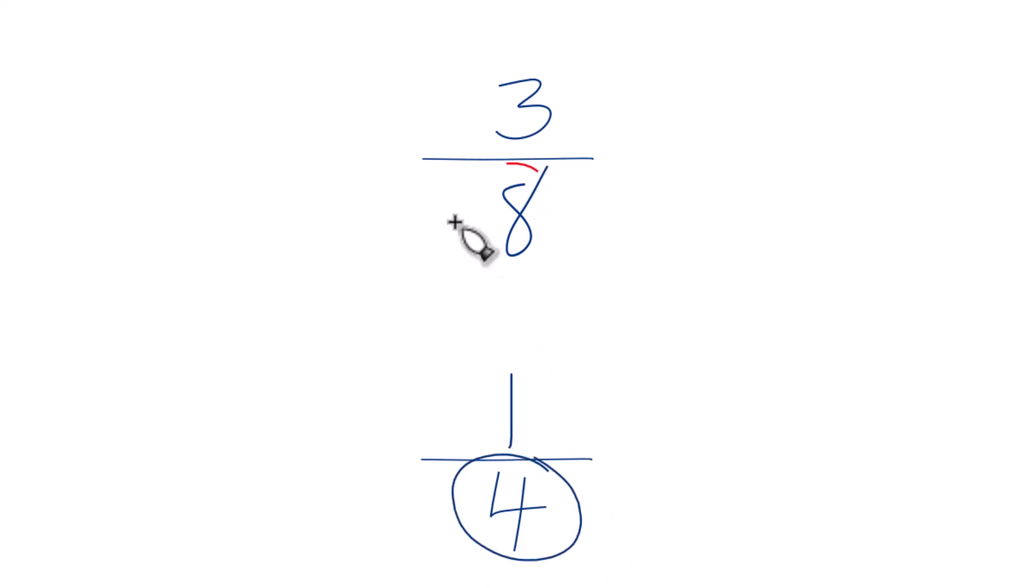So here we have 4 and 8. If these were the same, then we could just compare the numerators. We could tell which is bigger, 3 eighths or 1 fourth.